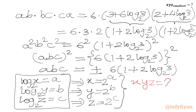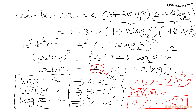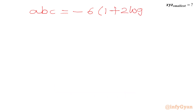Multiplying these three equations, XYZ equals 2 power A times 2 power B times 2 power C equals 2 power (A plus B plus C). For XYZ to be minimum, A, B, C should be negative, so we reject the positive sign and accept only the minus. Therefore ABC equals negative 6 times (1 plus 2 log 3 base 2).